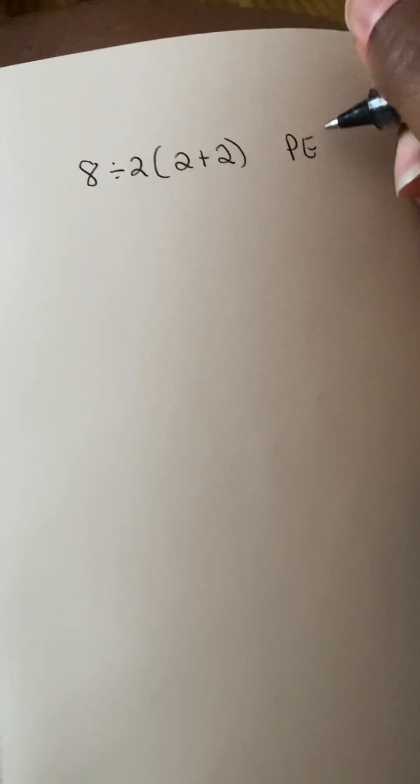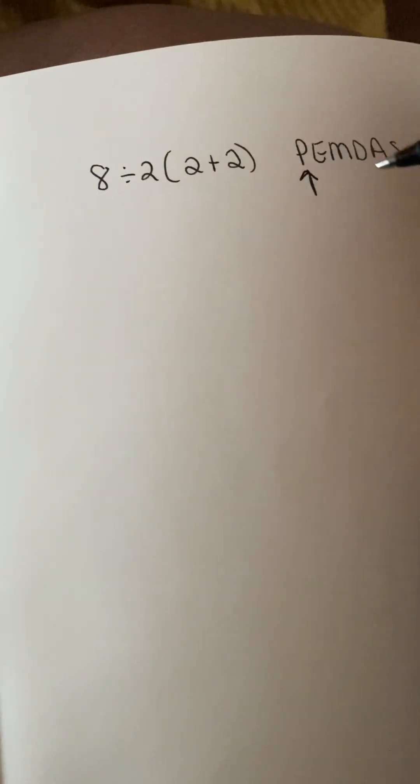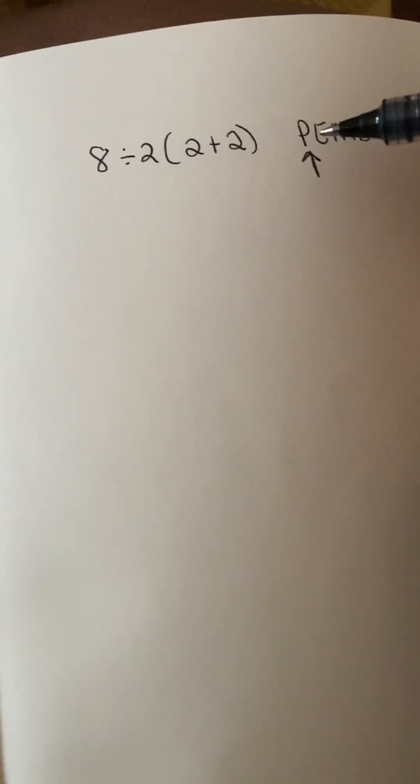So this is a viral math question that everyone's asking about. If you write PEMDAS, which is the order of operations, it says to do parentheses first. And the reason why everyone keeps getting it wrong is because they have a little bit of confusion as to what the parentheses really mean.